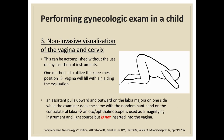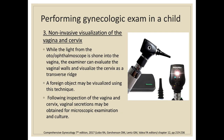For non-invasive visualization of the vagina and cervix, this can be accomplished without insertion of instruments. Using the knee-chest position, the vagina will fill with air, aiding evaluation of the vagina and cervix. An assistant pulls upward and outward on the labia majora on one side while the examiner does the same on the contralateral side. An otoscope or ophthalmoscope can be used as a magnifying light source but should not be inserted into the vagina. The examiner can evaluate the vaginal walls and visualize the cervix as a transverse ridge, and a foreign object may also be identified.